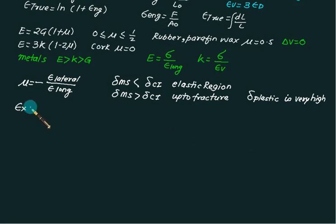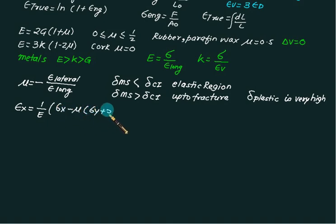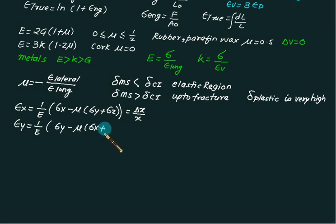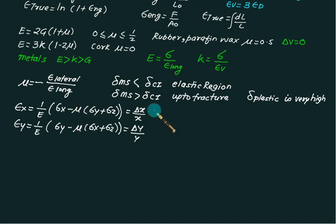If all three stresses are present, the linear strain along x is: epsilon_x = (1/E)[sigma_x − μ(sigma_y + sigma_z)] = δx / Lx. Similarly, epsilon_y = (1/E)[sigma_y − μ(sigma_x + sigma_z)] = δy / Ly, and epsilon_z = (1/E)[sigma_z − μ(sigma_x + sigma_y)].